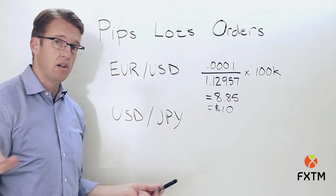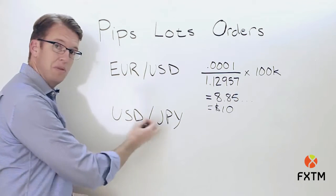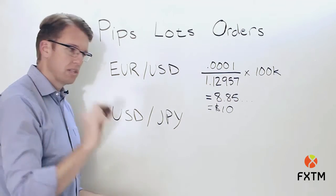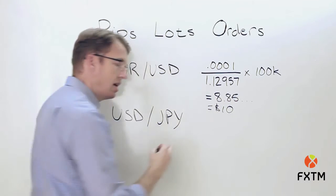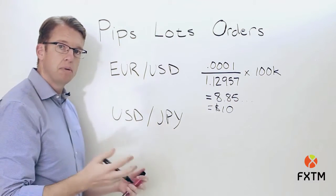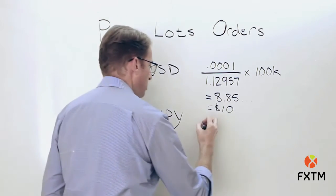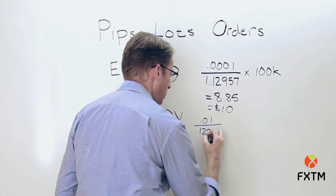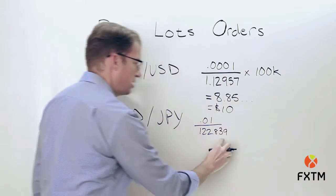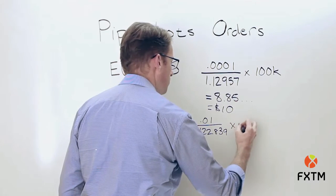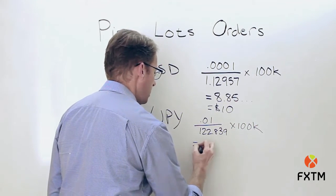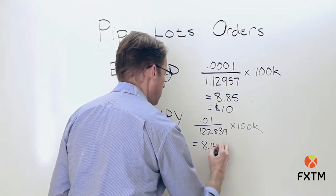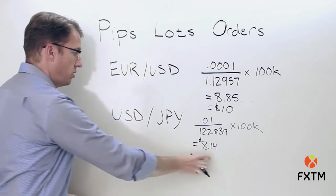What if the dollar is on the base side instead of the quote side — like in USD/JPY? The process is the same but slightly different. With a yen pair, the pip is at the second decimal place, so we put 0.01 in the numerator, divide by the current exchange rate — let's say 1.22839 — and multiply by 100,000 units of the base currency. This gives a result of about $8.14, and since the dollar is already the base currency here, no further conversion is needed assuming your account is dollar-denominated.